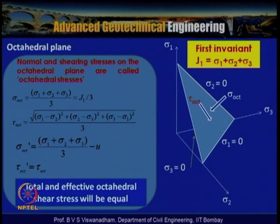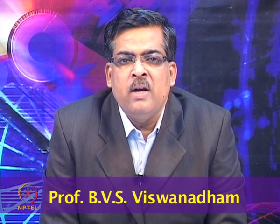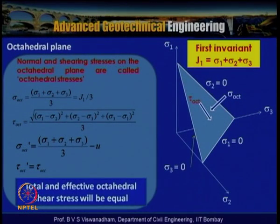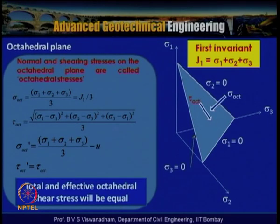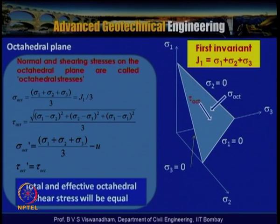The normal and shearing stresses on the octahedral plane are called octahedral stresses. The first stress invariant gives: σ_oct = (σ₁ + σ₂ + σ₃)/3 = J₁/3, and τ_oct = (1/3)√[(σ₁ − σ₂)² + (σ₂ − σ₃)² + (σ₃ − σ₁)²]. The effective octahedral normal stress is σ'_oct = (σ₁ + σ₂ + σ₃)/3 − u, while τ'_oct = τ_oct, meaning total and effective octahedral shear stresses are equal.